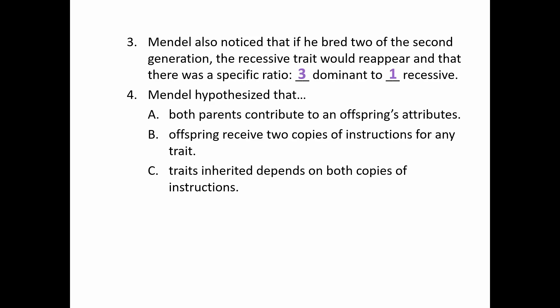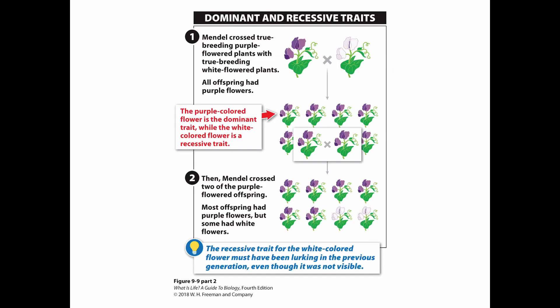Based on this, he hypothesized three things: that the parents are both contributing to the offspring, that the offspring are getting two copies of the instructions for any trait they have, and that the trait you see depends on the copies of the instructions you receive. So he took true breeding purple bred with true breeding white, and all the offspring in the second generation were purple. He took two of those purple plants, bred them together, and now the white came back.